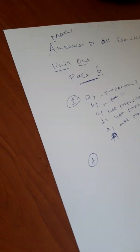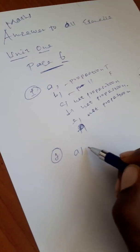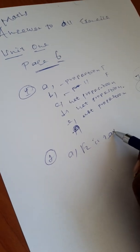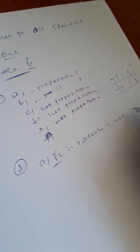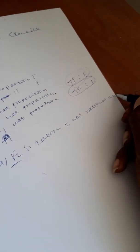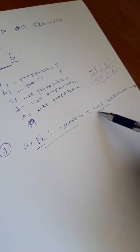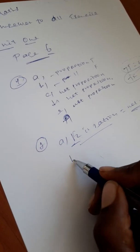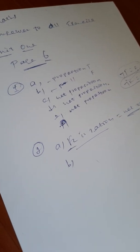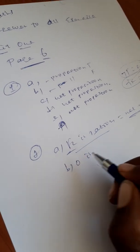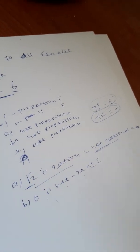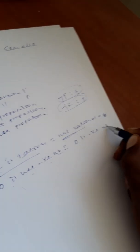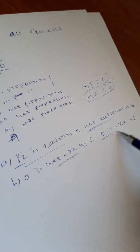Statement: root 2 is a rational number. The negation is: root 2 is not a rational number. Next: zero is not a negative integer. The negation of this statement is: zero is a negative number.